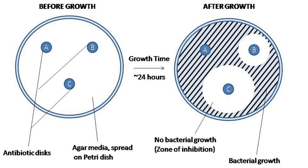The concentration of the compound will be highest next to the disc, and will decrease as distance from the disc increases. If the compound is effective against bacteria at a certain concentration, no colonies will grow where the concentration in the agar is greater than or equal to the effective concentration. This is the zone of inhibition. This, along with the rate of antibiotic diffusion, are used to estimate the bacteria's susceptibility to that particular antibiotic.